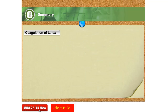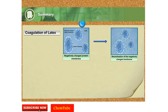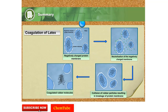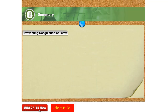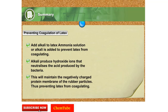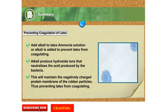Latex coagulates when dilute acids are added to it. The hydrogen ions from the acid neutralize the negatively charged protein membrane. The rubber particles collide with each other, causing the membrane to break. The rubber molecules clump together, allowing latex to coagulate. Coagulation can be prevented by adding alkali, which produces hydroxide ions that neutralize the acid. Thus, the rubber particles repel each other and latex remains as a suspension.